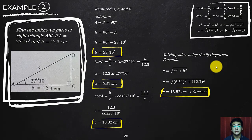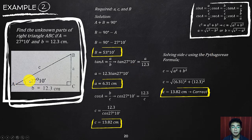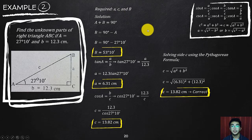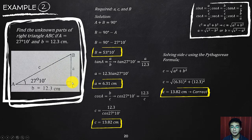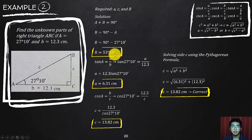For example two: find the unknown parts of right triangle ABC if angle A = 27 degrees 10 minutes and side B = 12.3 centimeters. Our unknowns are side C, side A, and angle B. Angle B is easiest to find first. Since A and B are complementary angles in a right triangle, B = 90° − 27°10' = 62°50'.